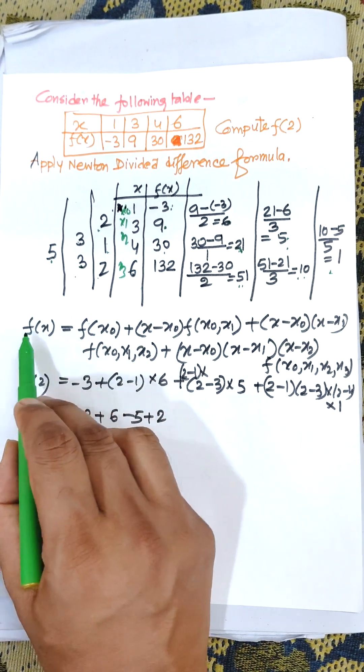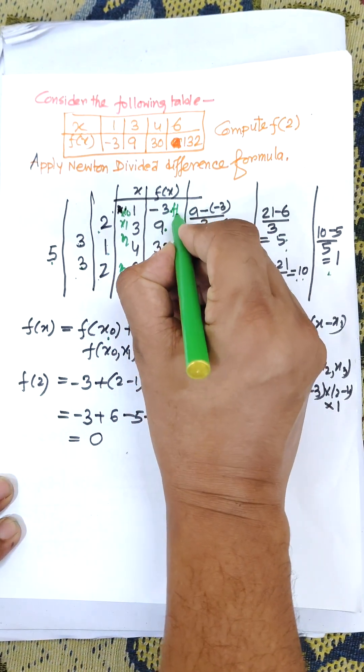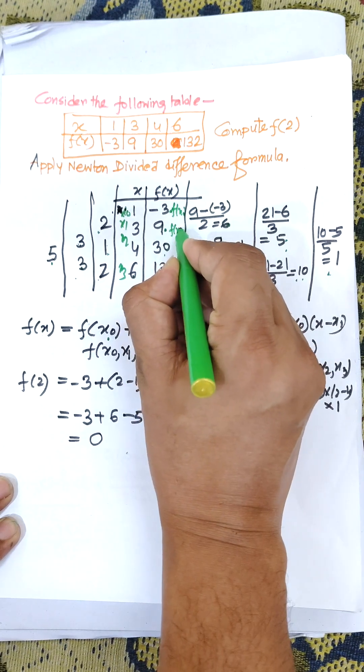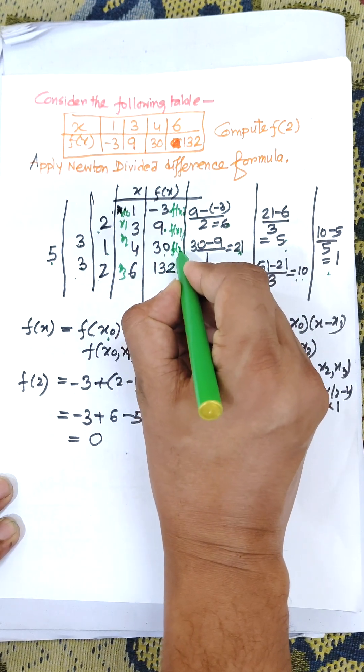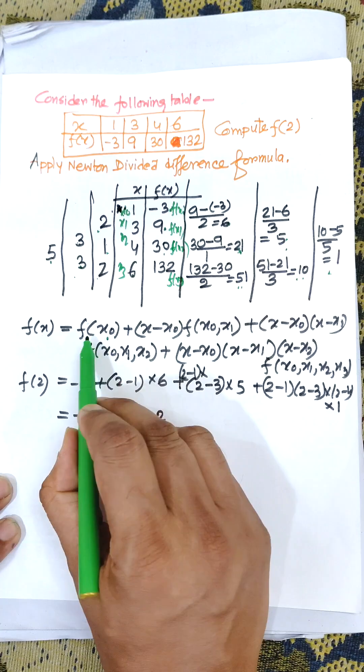Now we need to apply the formula f(x) equals f(x0). This one is known as f(x0), this is f(x1), this is f(x2), this is f(x3).